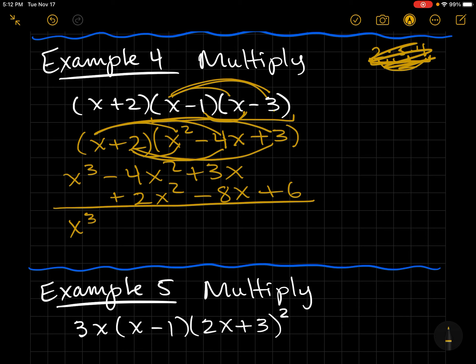And now I can easily add the like terms. That's negative and that's positive, so that's negative 2x². Watch those integers. Alrighty. There we go.